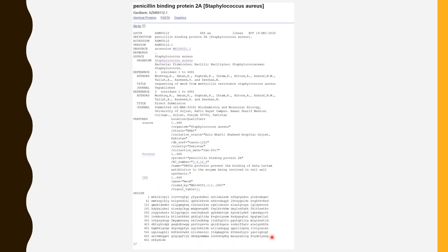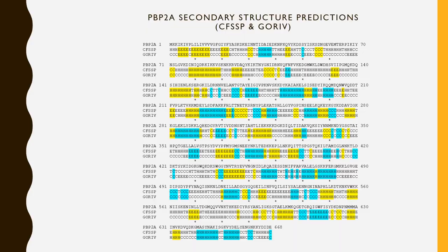From this primary structure, we can use it to help determine the secondary structure. After obtaining the primary structure of penicillin binding protein 2A, I used two secondary structure prediction programs to help derive a secondary structure from it.